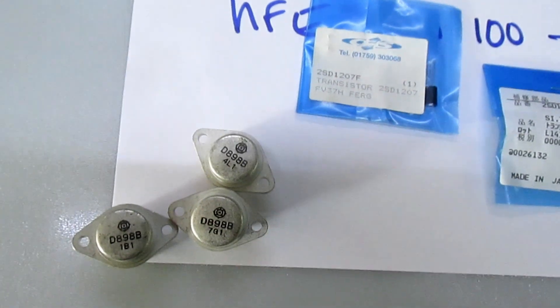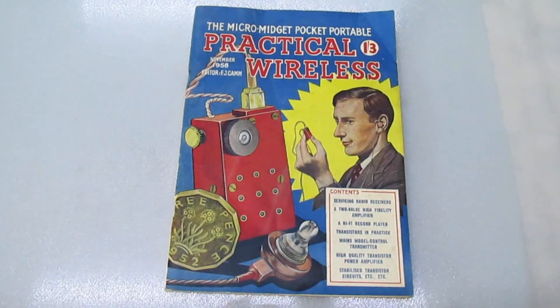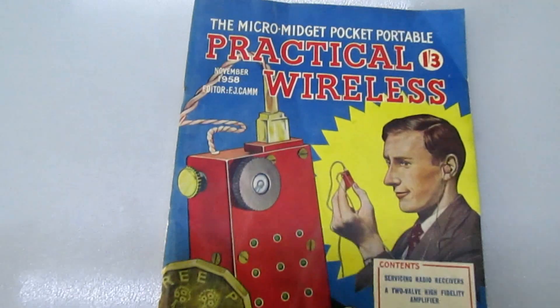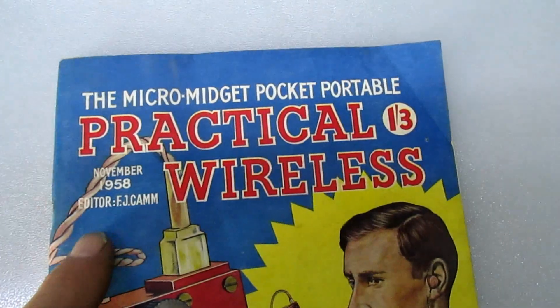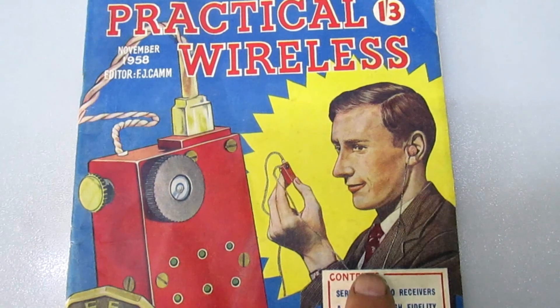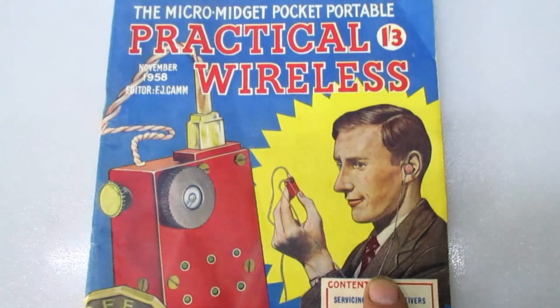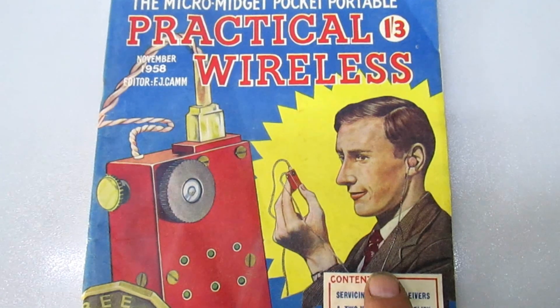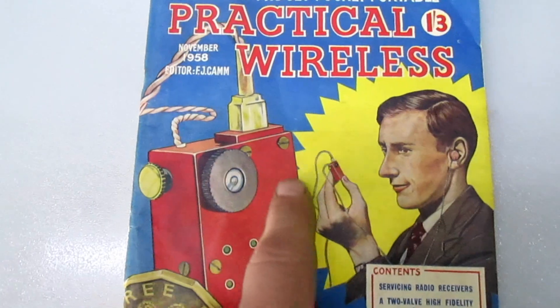Here we have a Practical Wireless magazine from November 1958. You might recognize the man on the front, he's a lot younger there. It's actually Clive Sinclair, or Sir Clive as they call him now, a British inventor who invented the world's first pocket radio.